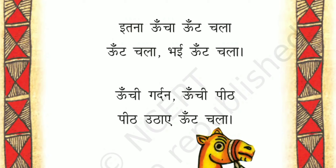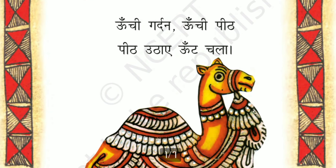Oont chala bhai oont chala — camel walked, oh camel walked. Oonchi gardhan oonchi peet — gardhan means neck, peet means back. Because he is having a hump, so oonchi oonchi means high high — high neck and high hump. Peet uthaye oont chala — holding his back or hump, the camel walked.